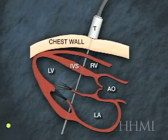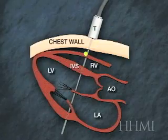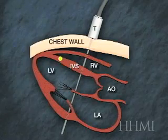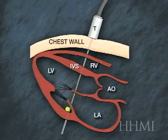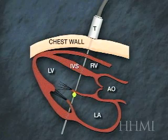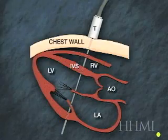The transducer is placed on the chest, and a sound wave passes through the right ventricle, through the interventricular septum, and into the left ventricular area. In real time, this structure is moving, and we should be able to see that now.